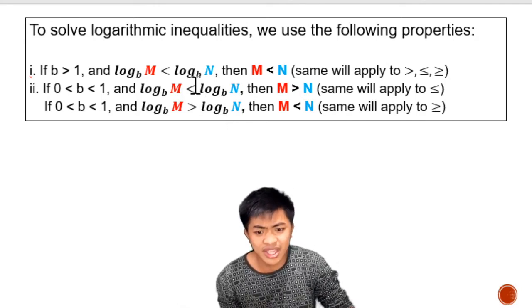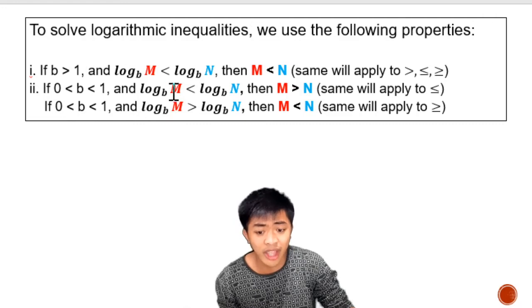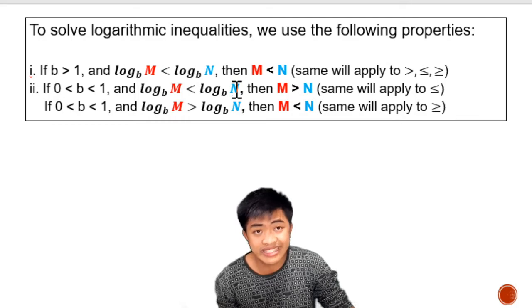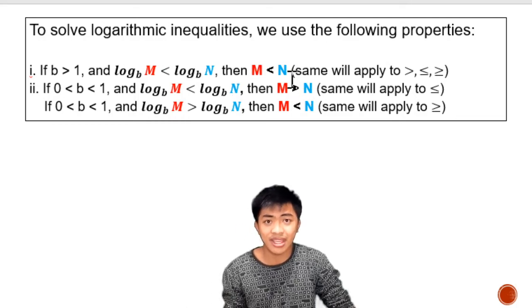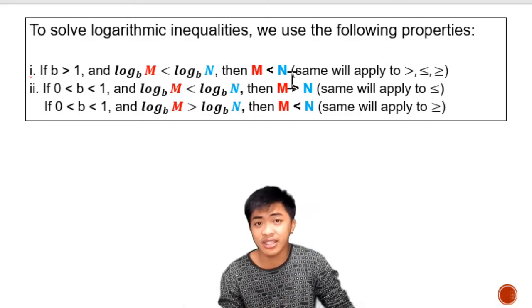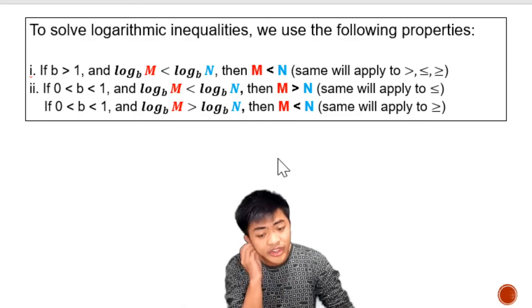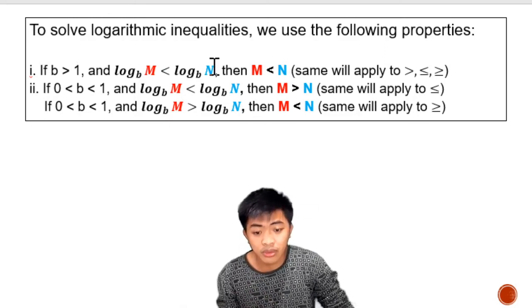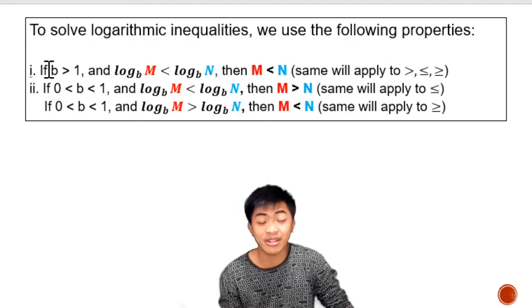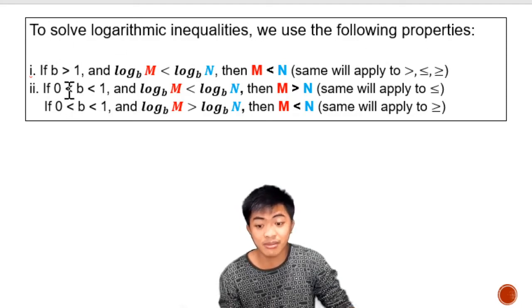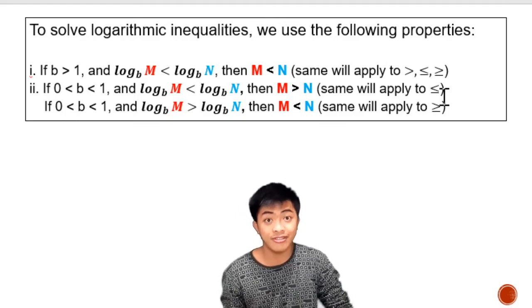The logarithm with argument m is set less than the logarithm with argument n. If we solve them, it becomes greater than — we are reversing the direction of the inequality symbol. In Property 1, preserve the inequality symbol if the base is greater than 1. But if the base is in between 0 and 1, reverse the direction of the inequality symbol.